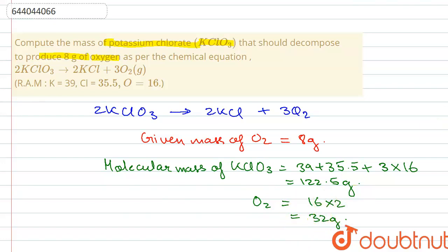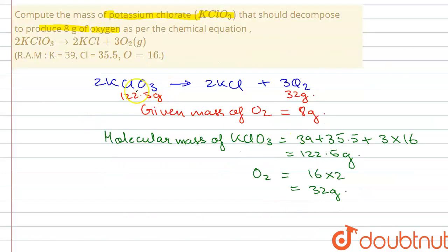So as you can see here that if we take 122.5 grams of KClO3 then 32 grams of oxygen is obtained. So how many grams of potassium chloride will be required to produce 8 grams?